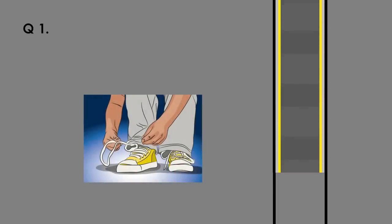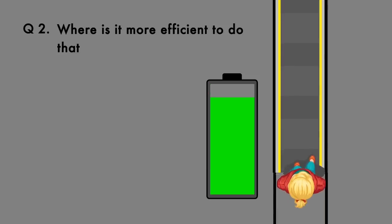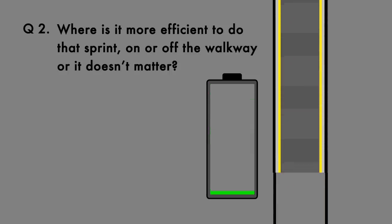Now how would you answer these two questions? First, suppose you see your shoe is untied and you must stop at some point before the terminal to tie it. Is it more efficient to tie it on the walkway, off the walkway, or it doesn't matter? Then question two: suppose you have enough energy to sprint for a short period of time. Where is it more efficient to do that sprint? On or off the walkway, or again it doesn't matter?